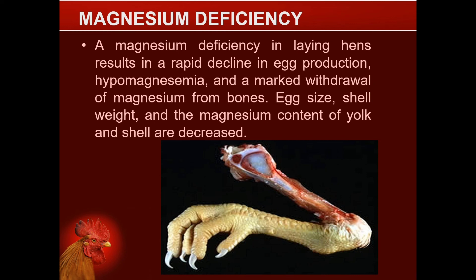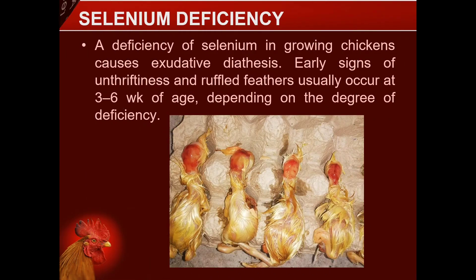Egg size, shell weight, and the magnesium content of yolk and shell are decreased. Iodine deficiency in growing chickens causes oxidative diaphysis. Early signs of unthriftiness and ruffled feathers usually occur at 3 to 6 weeks of age, depending on the degree of deficiency.